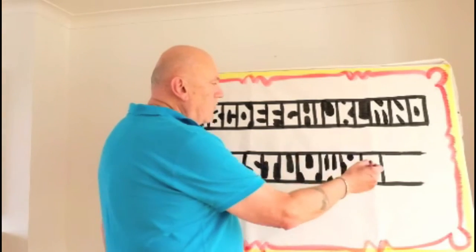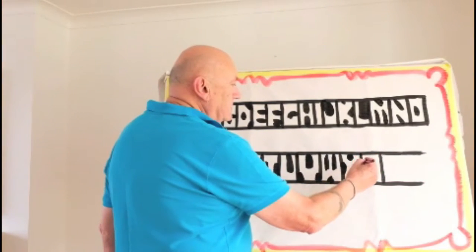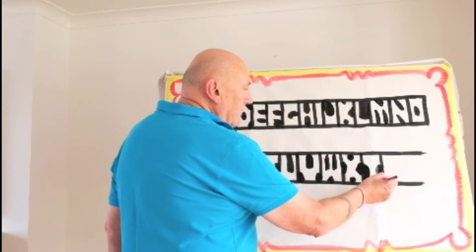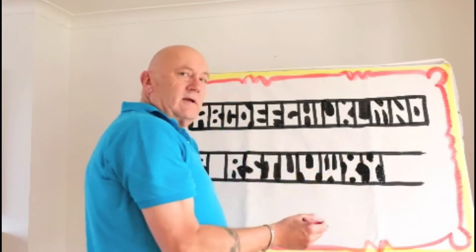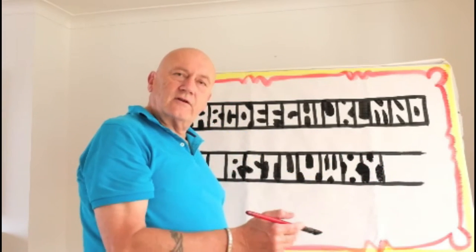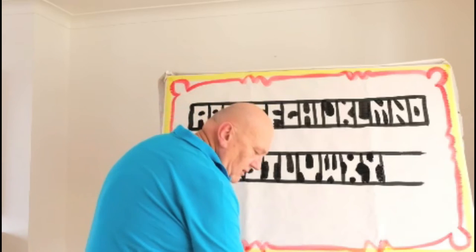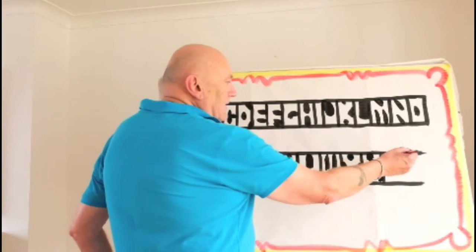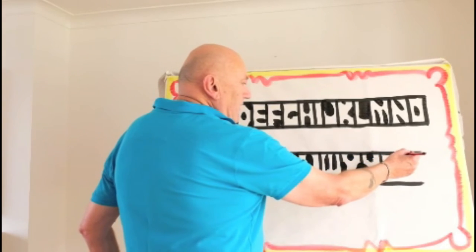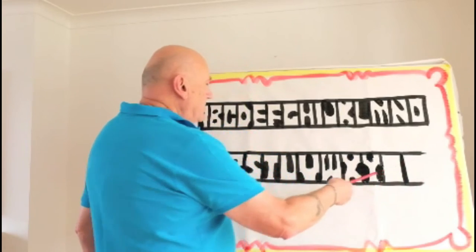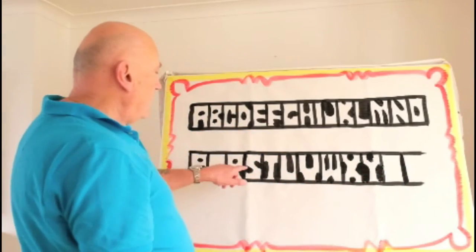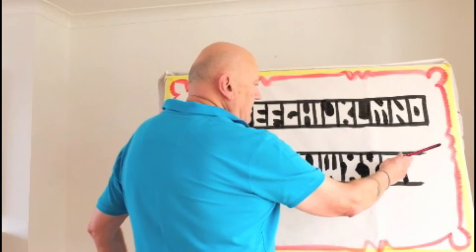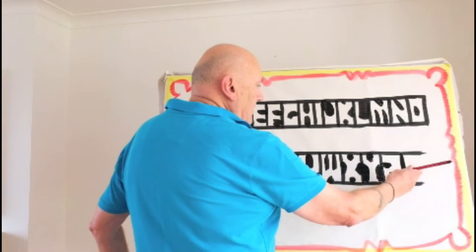X — I put the Y somewhere wrong. X, Y is this one. Then I always leave it open so that if I do make a mistake I can add another letter or take one out. I just left one there for the Z. The Z is the opposite of the S — it's got to go the other way around. So there's the Z.